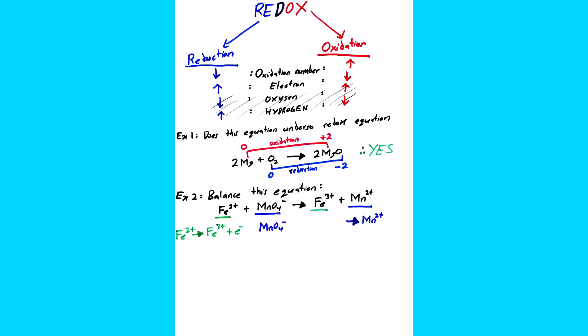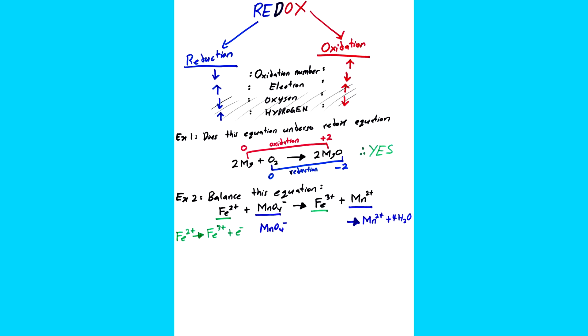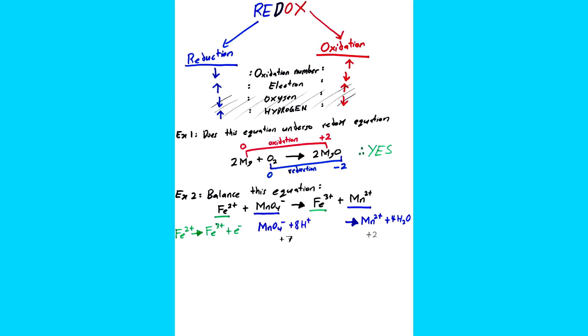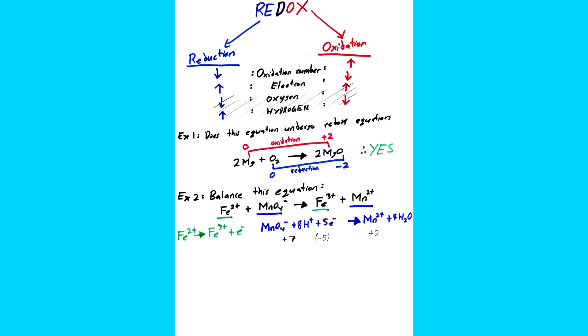Basically, since MnO4 ada 4 oxygen, kita kena tambah 4 H2O dekat sebelah kanan. And then because sekarang kita ada extra 8 hydrogen dari 4 H2O, kita kena tambah 8 H plus dekat kiri. And then now, baru kita check total charge kiri dan kanan. Dekat kiri kita ada plus 7, dan dekat kanan kita ada plus 2. So untuk balance, kita kena tambah negative 5 dekat kiri, iaitu 5 electron.